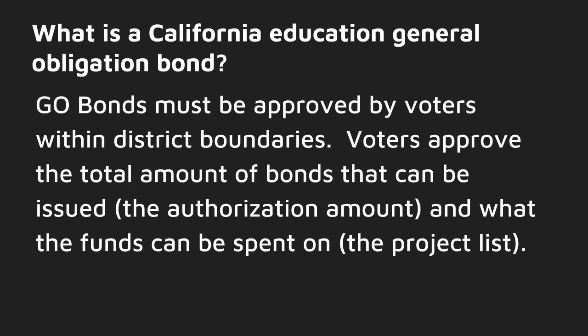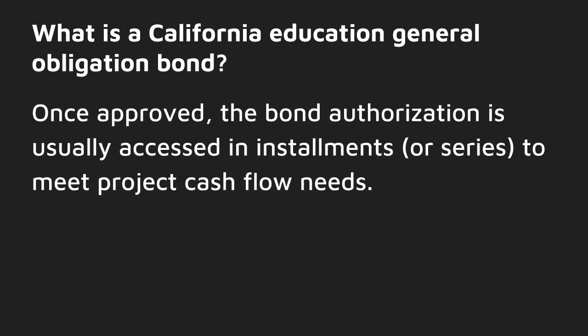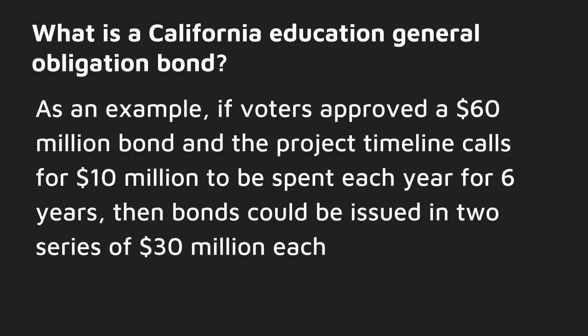GEO bonds must be approved by voters within district boundaries. Voters approve the total amount of bonds that can be issued, or the authorization amount, and what the funds can be spent on. Once approved, the bond authorization is usually accessed in installments or series to meet project cash flow needs.